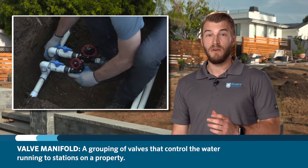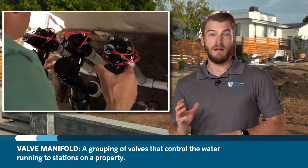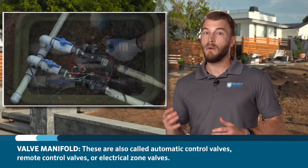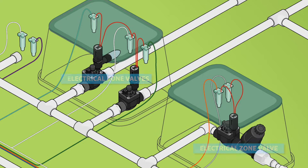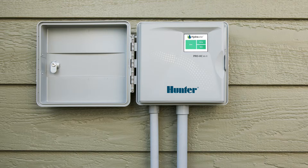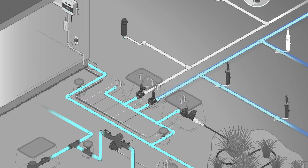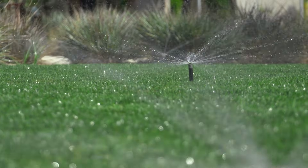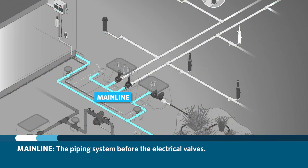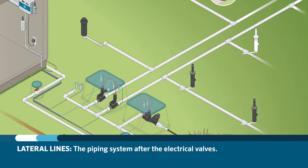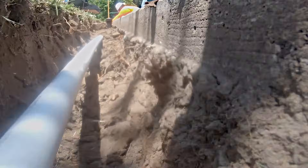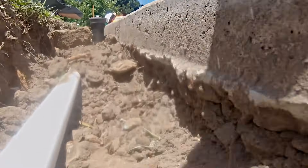The mainline connects to the valve or valve manifolds. Valve manifolds are a grouping of valves that control water flowing through the zones or stations on a property. Sometimes these are called automatic control valves, remote control valves, or electrical zone valves. Electrical zone valves are installed to control the water flow to the sprinklers in each zone. Only when the controller sends a 24-volt alternating current electrical signal to open the particular valve will that valve open and allow water to flow from the mainline through the lateral lines to the sprinklers or emitters. The piping system before the electrical valves is referred to as the mainline, and any pipe system after the electrical valves is referred to as lateral lines. Lateral lines connect all the sprinklers on one zone and allow the water to flow from the valve to the sprinklers in the zone.